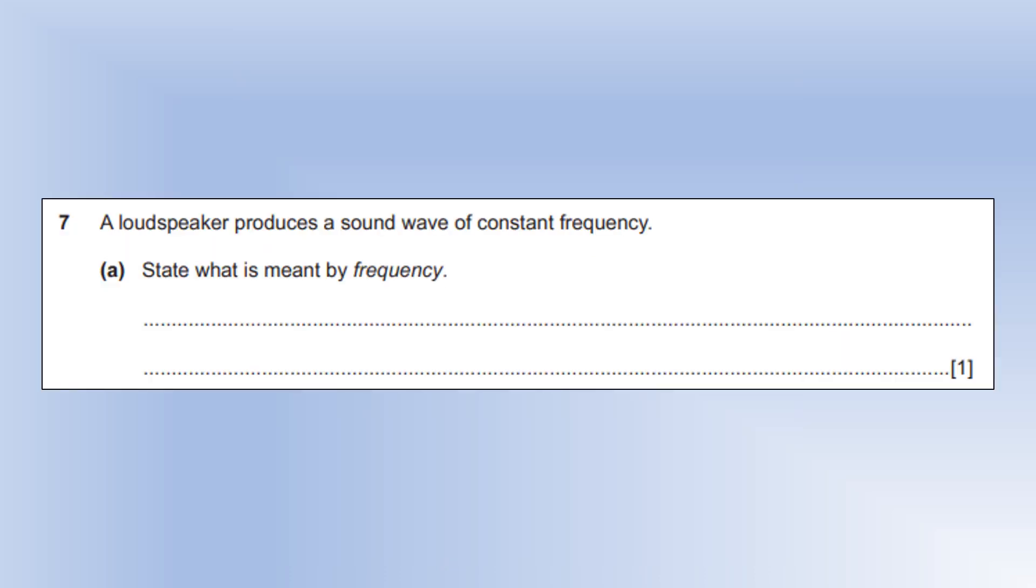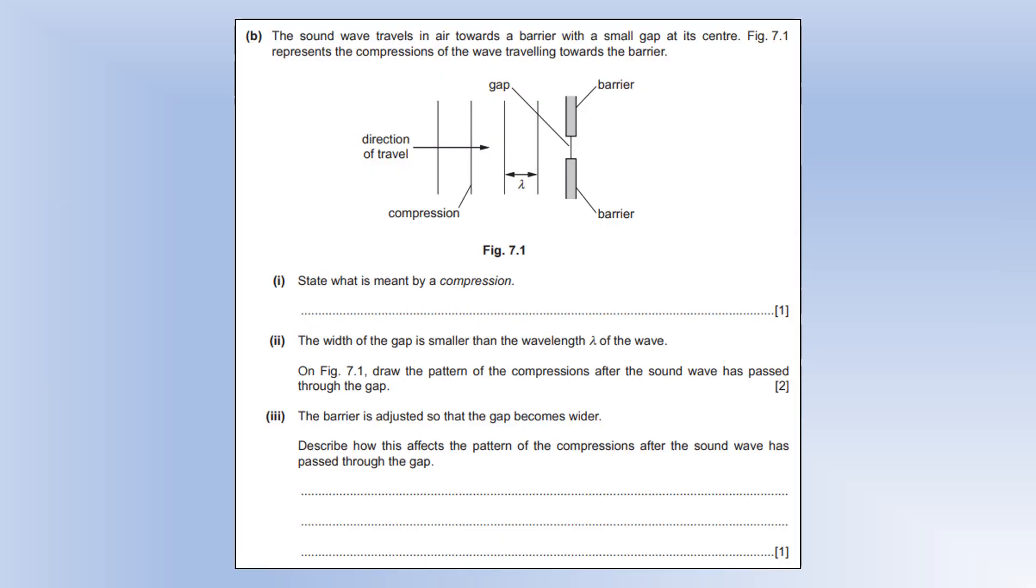A loudspeaker produces a sound wave of constant frequency. State what is meant by frequency. Well, it would be the number of waves per second produced by the loudspeaker. The sound waves travel in air towards a barrier with a small gap at its centre. The lines represent the compressions of the wave traveling towards the barrier, and the distance between them would be a wavelength. State what is meant by a compression. It's a region of increased density, or because it's a gas, we could talk about increased pressure, or that the distance between the molecules is smaller.